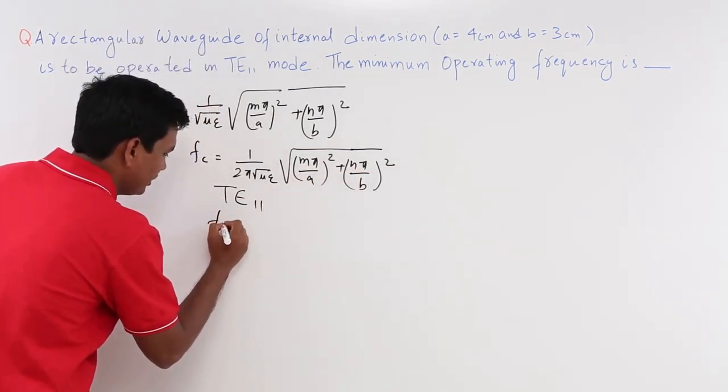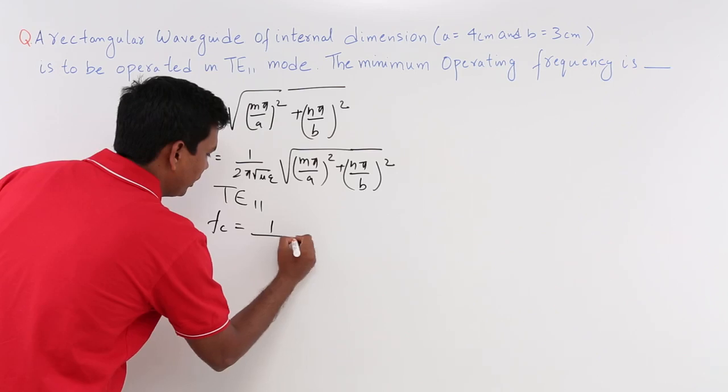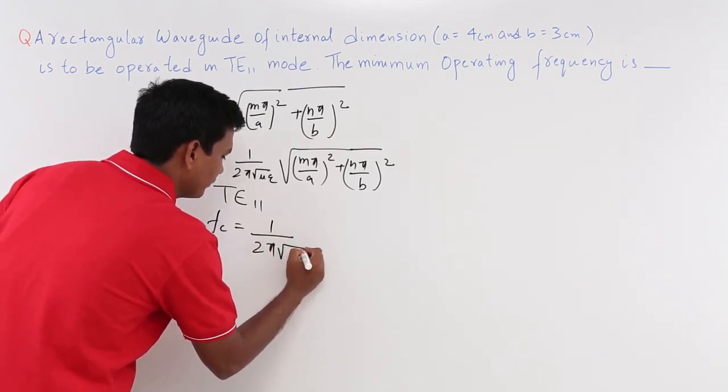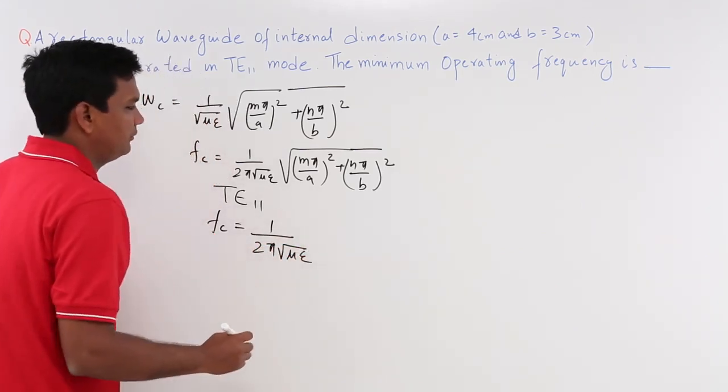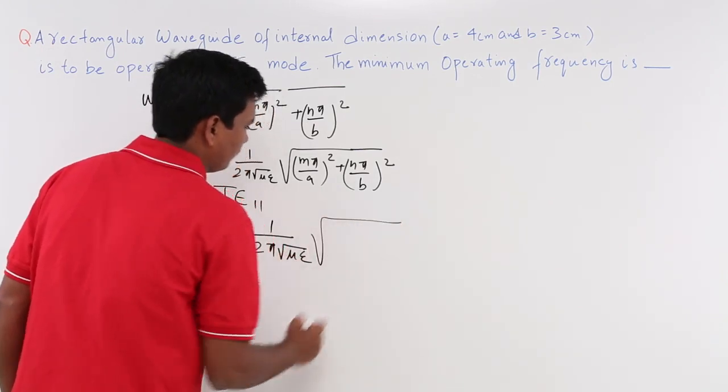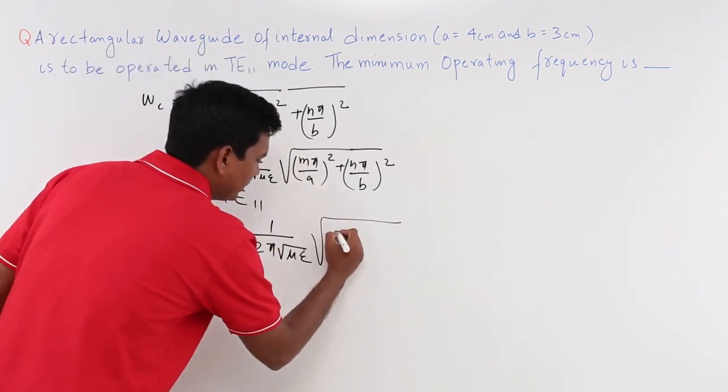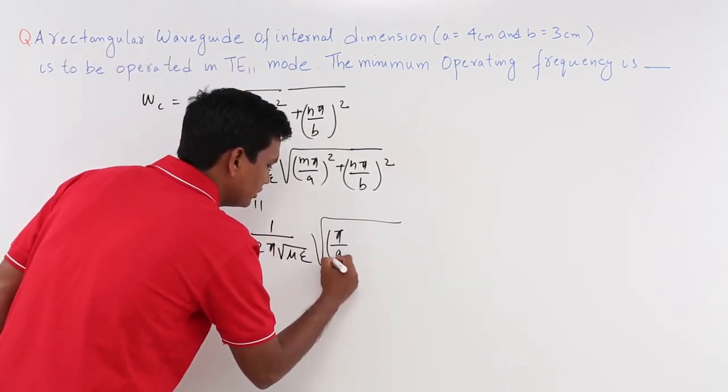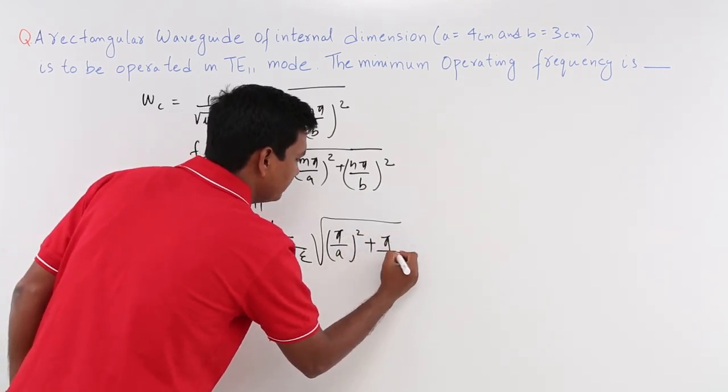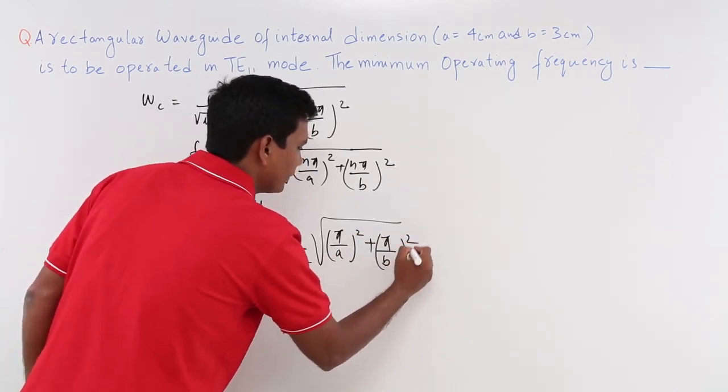If I substitute, Fc will be 1 by 2 pi mu epsilon. m equal to 1, it means pi by A the whole square plus pi by B the whole square.